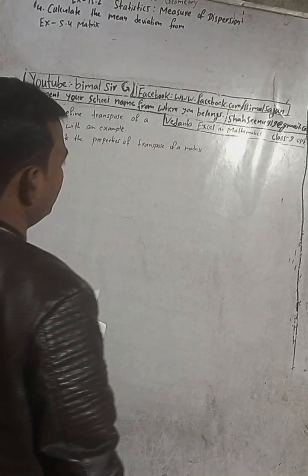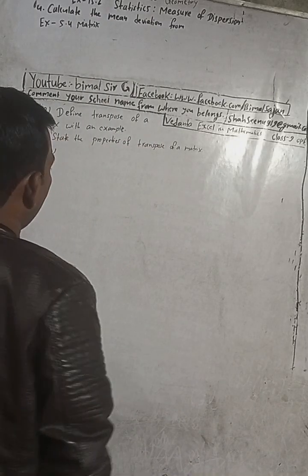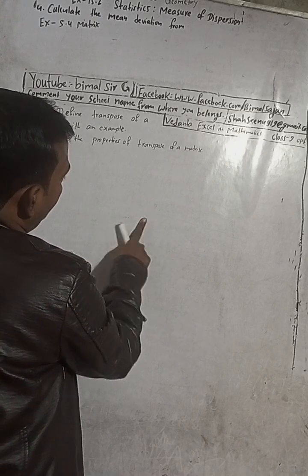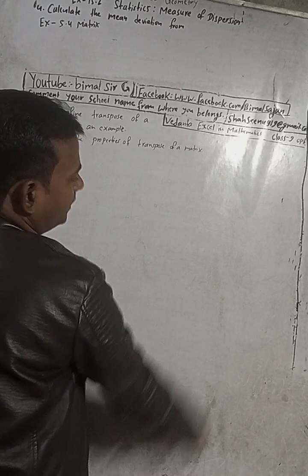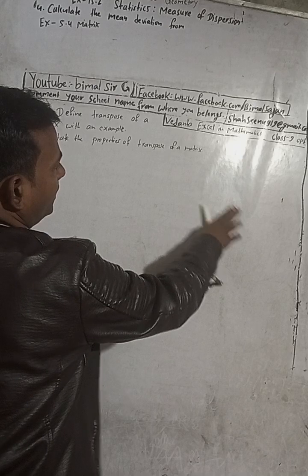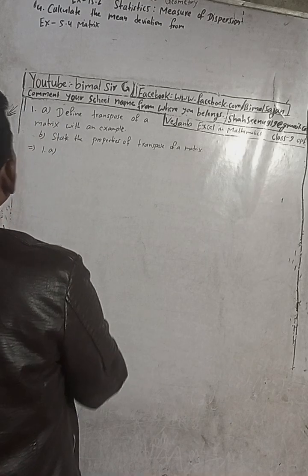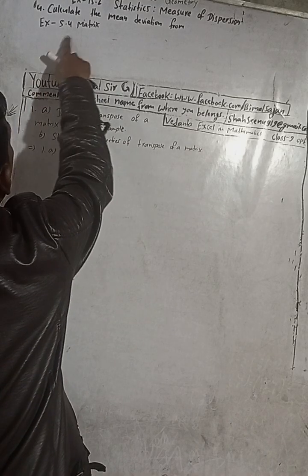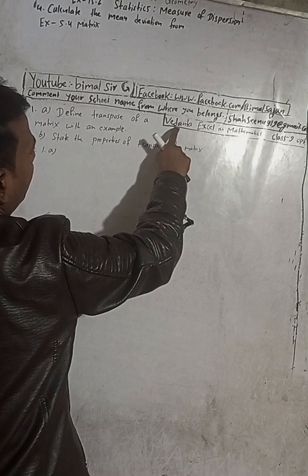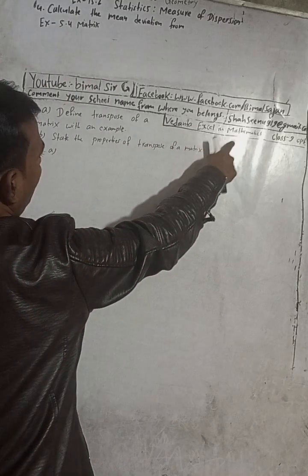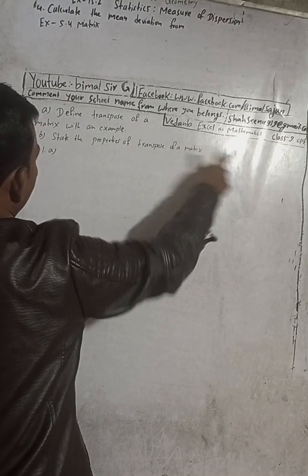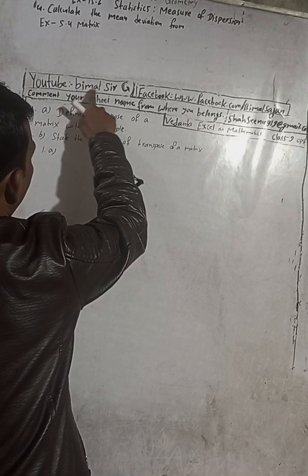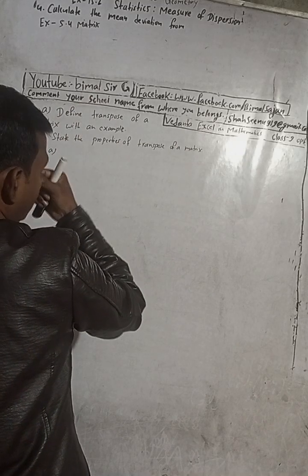Hi class 9 and 10 students, welcome back to Be My Search YouTube channel. In this chilly cold season I am here to warm up your days and nights with exciting content. So let's chase away the winter season and make it a little warmer with mathematical solutions of class 9 and 10. Here the question is exercise 5.4, matrix, Vedant Excel in optional mathematics class 9.